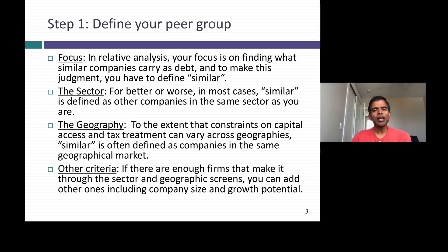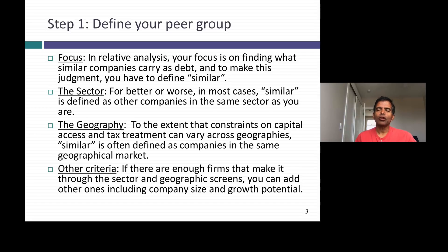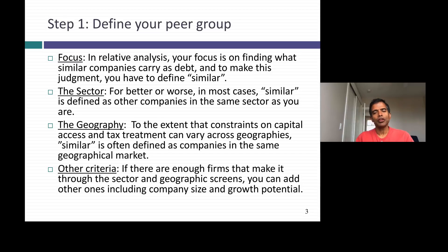If you think about trying to set dividends based on your peer group, the first step is defining who your peer group is — and here you have to make some judgment calls. It could be companies in your own sector. If you're a software company, look at other software companies. Maybe there are differences in dividend policy across countries because of differences in tax treatment, so maybe you want to focus on just U.S. software companies. Then you can add other criteria — perhaps larger software companies. You can see that determining dividend policy based on other companies requires judgment calls on who those companies are going to be.